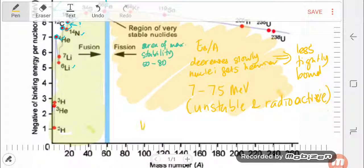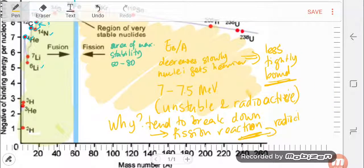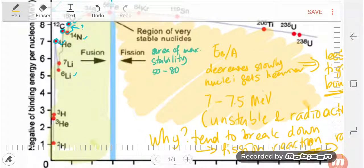Why they are unstable and radioactive? Because since they are less tightly bound, means that they tend to break down. And when the nucleus break down, it actually undergoes fission reaction. And during the fission reaction, the nucleus will release radioactive energy. That's why they are radioactive.